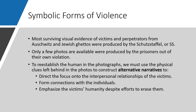Only a few photographs available from that time were actually produced by the prisoners or the victims out of their own volition. To re-establish the human in the photographs, we must use physical clues left behind in the photos to construct alternative narratives. These alternative narratives are not big fantasies built on things we don't know, but instead focus on the interpersonal relationships of the victims you can tell from the photos, forming a connection with individuals and emphasizing their humanity despite all efforts from Nazi Germany to erase them.